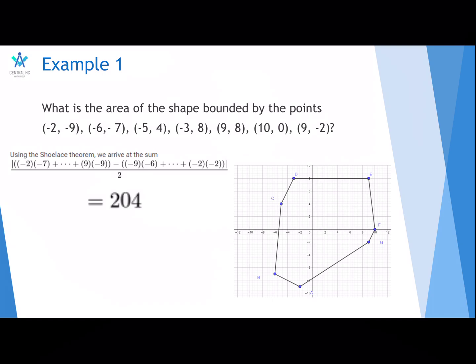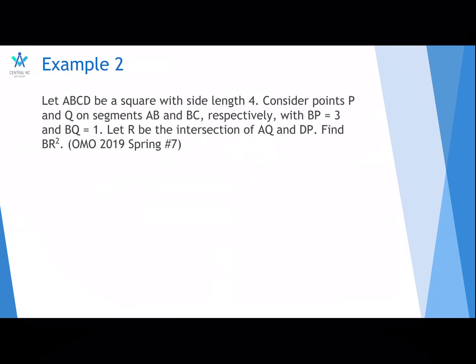We use the Shoelace theorem and we arrive at this sum, which is equal to 204. You can compute that by hand or use a calculator. Also, they have to be convex, I believe, the shape.